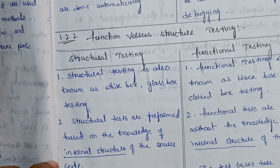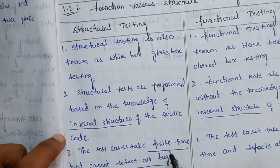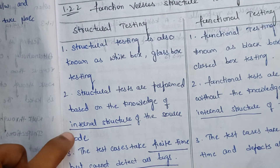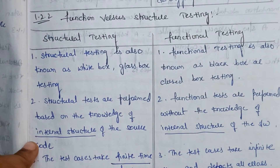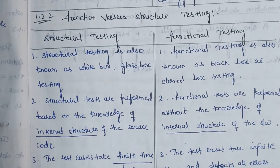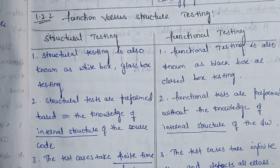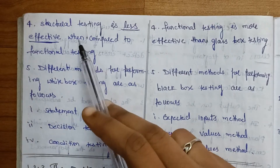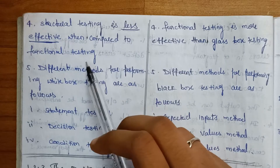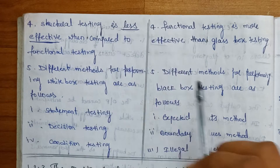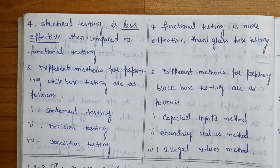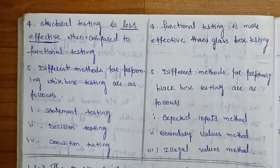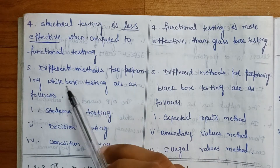In structural testing, the test cases take infinite time but can't detect all bugs. In functional testing, test cases also take infinite time but can detect all errors. Structural testing is less effective when compared to functional testing, whereas functional testing is more effective. Different methods for performing white box testing are: statement testing, decision testing, conditional testing, and boundary/illegal testing.